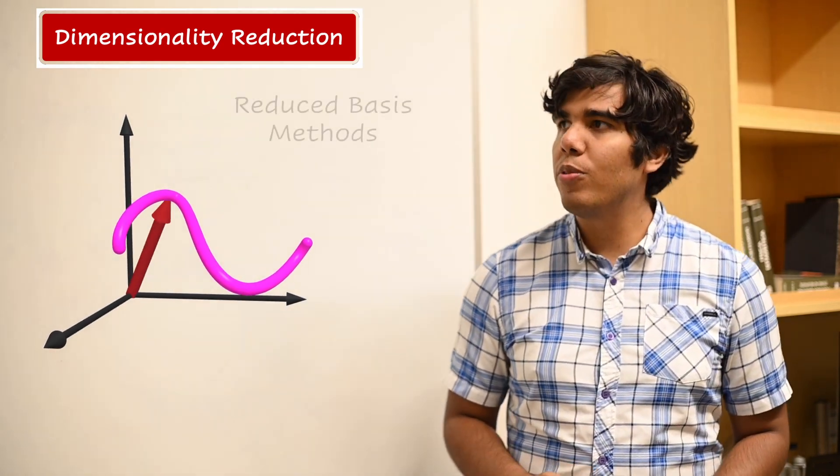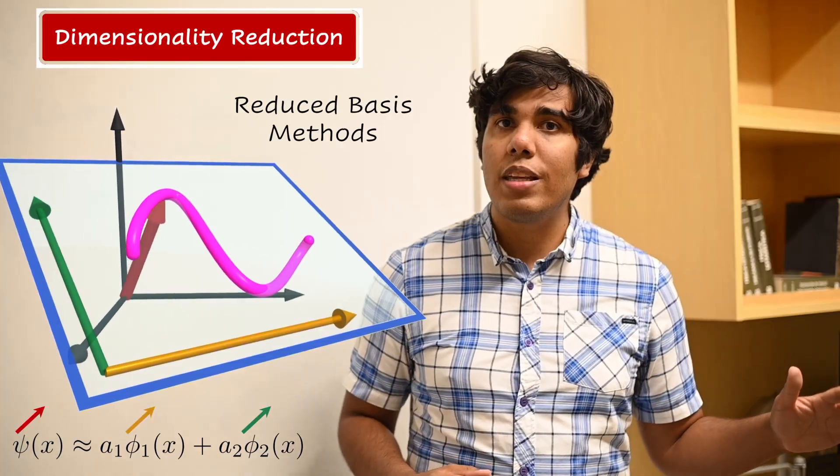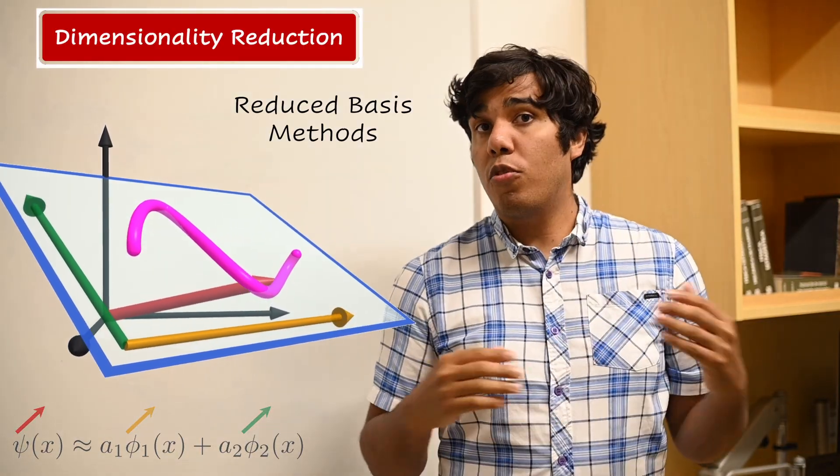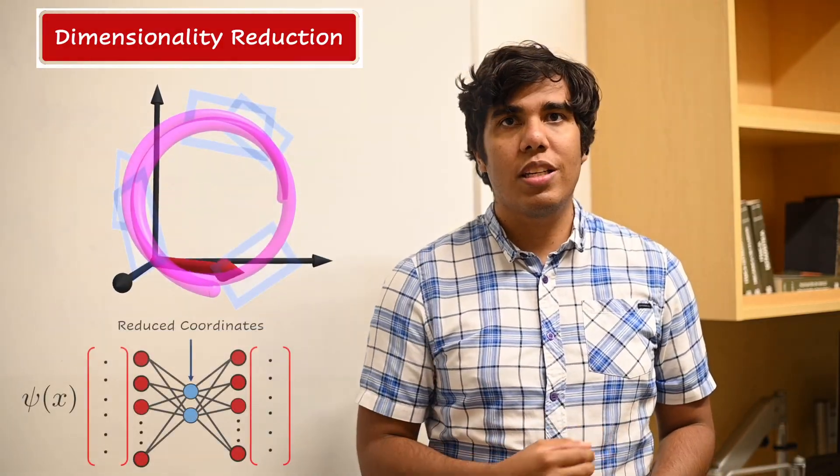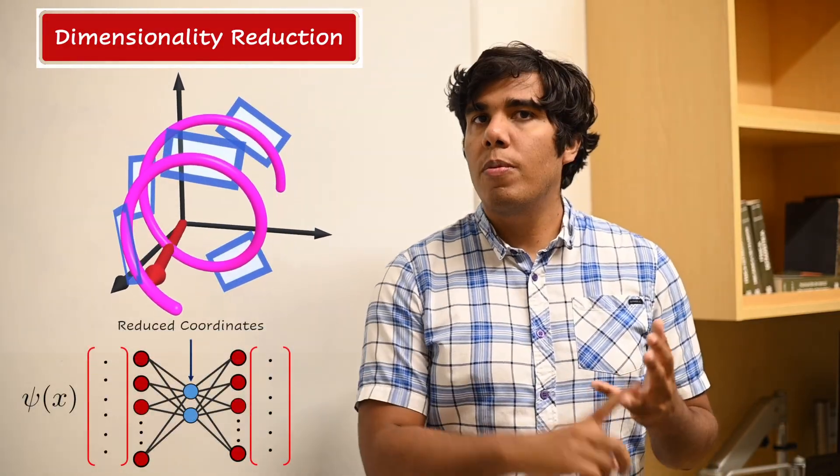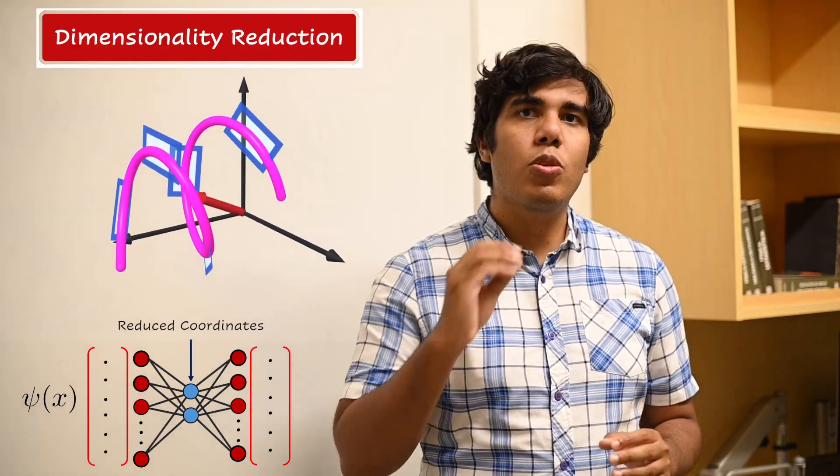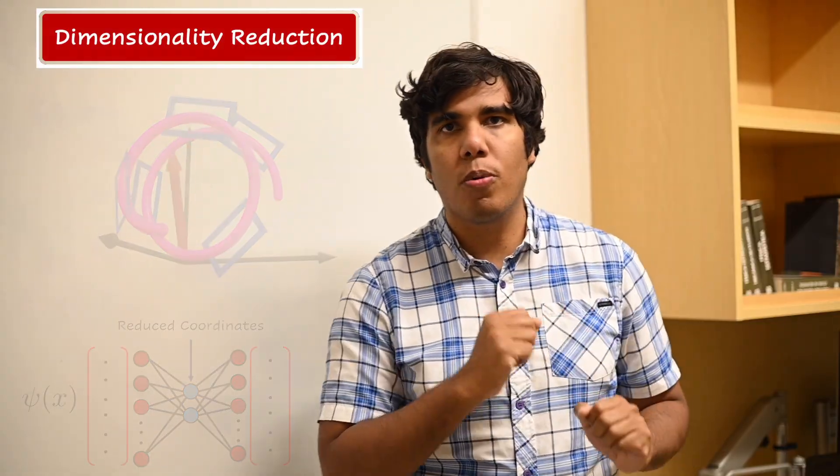For example reduced basis methods aim to solve the problem in a low dimensional subspace that approximates the solution manifold. For problems that are more complicated than that we can rely on techniques from machine learning such as neural networks, normalizing flows, and genetic algorithms to find a set of reduced coordinates and reduced equations that better represent our system for computation.